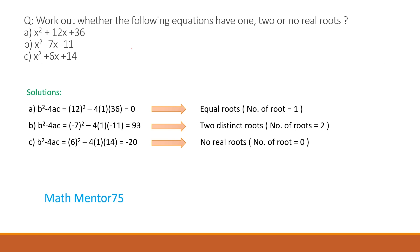When we have one root or two roots, that means the roots are real. If we don't have any root, this means no point on the x-axis — this is also known as complex roots.